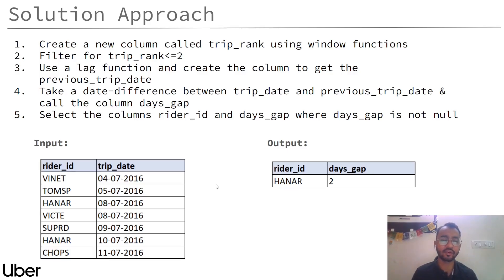Here the rank column will be trip_rank, which will tell us what is the rank of that particular trip. For example, this will be Hanar's first trip, and at the bottom this will be Hanar's second trip. Then once we have created this rank column, we will filter for trip_rank less than or equal to 2 so that we get the first two trips.